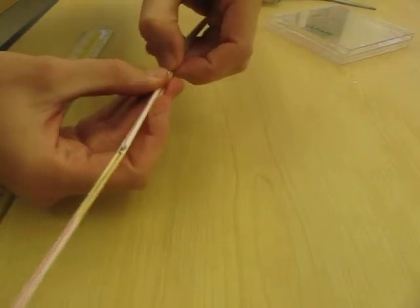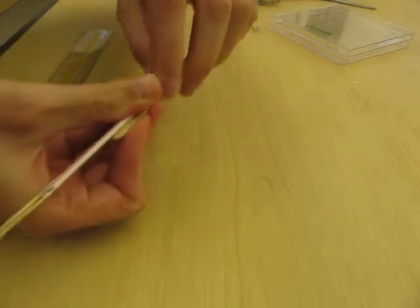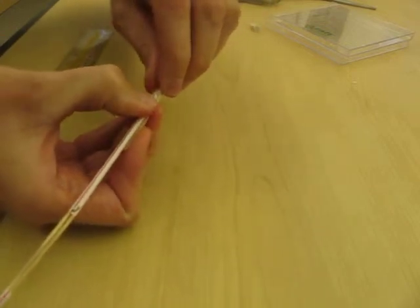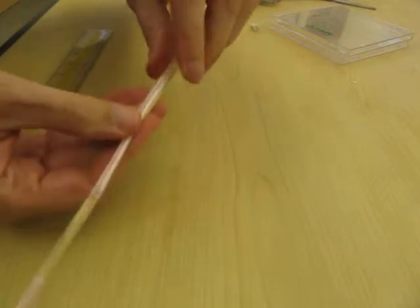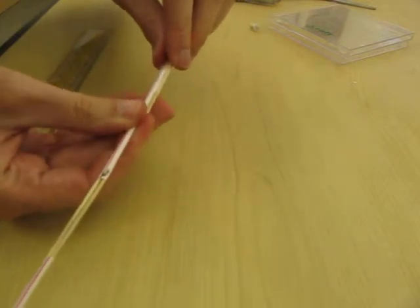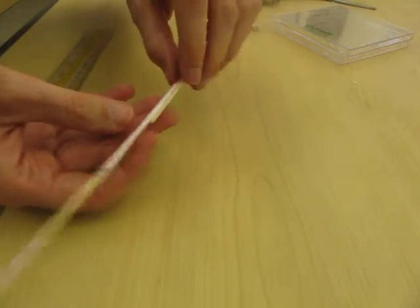...slide your small straw in on top of the wooden stick, and push it in. You want the wooden stick all the way inside the drinking straw.